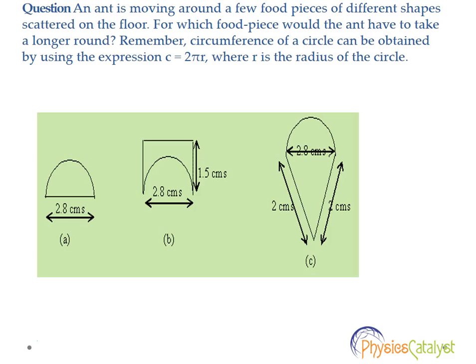Remember, circumference of a circle can be obtained by using the expression c = 2πr, where r is the radius of the circle.